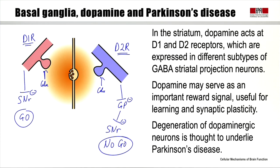Dopamine also has an important role in brain disease. In particular, in Parkinson's disease, the degeneration of dopaminergic neurons appears to be the major cause of symptoms. The major symptoms include bradykinesia — slowness of movement — which may result from a deficit in the D1 go pathway, causing a lack of self-motivated, goal-directed movements. The missing dopamine signal is thought to be one of the causes of bradykinesia in Parkinson's disease.